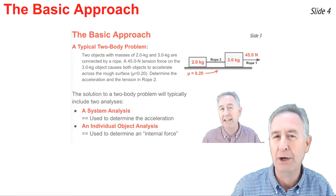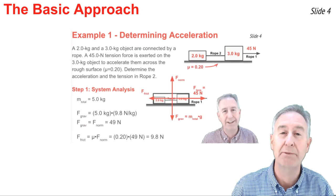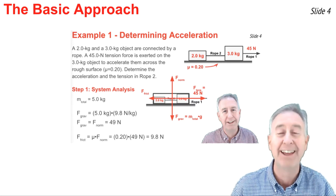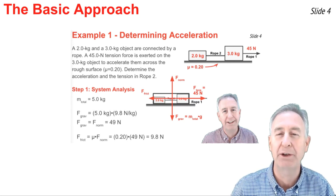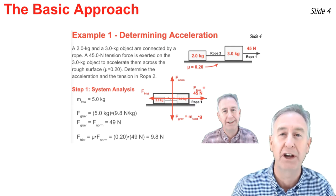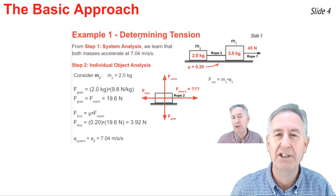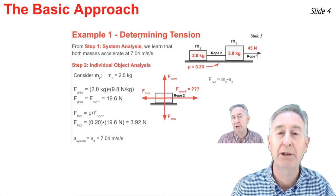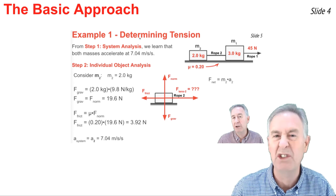The first step is what we call the system analysis. In the system analysis, we draw a free body diagram for the system of two objects, pretending the actual two objects are one. And then we use Newton's second law in order to determine the acceleration of the system. In the second step, we pick either one of the objects, we draw a free body diagram, and then we use Newton's second law in order to determine the internal force or the tension in the string.